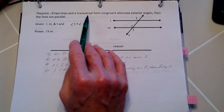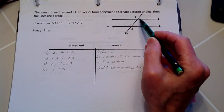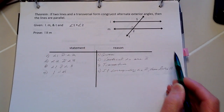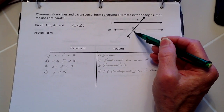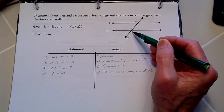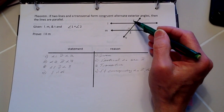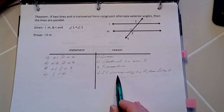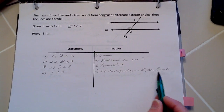Next, if two lines and a transversal form congruent alternate exterior angles — angles one and two — then the lines are parallel. Using the same strategy: angles two and three are vertical angles, so they're congruent. By substitution or the transitive property, angles one and three are congruent corresponding angles, and therefore the lines are parallel.